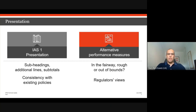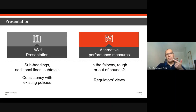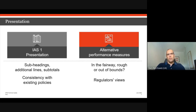IAS 1 guidance says that any subtotals, line items, or extra headings should: be comprised of amounts recognised and measured in accordance with IFRS; be presented and labelled in a clear and understandable manner; be consistent from period to period; and not be displayed with more prominence than other subtotals required by IAS 1. A key point is consistency — if you have an existing policy for presentation, you need to consider carefully why it needs to be amended for COVID-19. Similarly, if developing a policy for the first time for exceptional items arising from COVID-19, that policy would need to be applied consistently in the future.